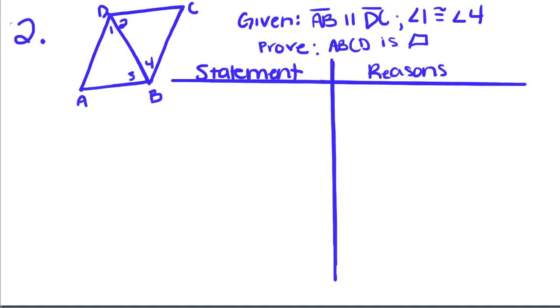Our next problem is going to deal with this shape, trying to prove it's a parallelogram. Given that AB is parallel to DC and angle 1 is congruent to angle 4, prove ABCD is a parallelogram. Let's write our given information: AB parallel to DC, angle 1 congruent to angle 4.